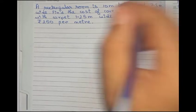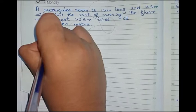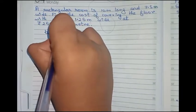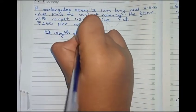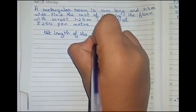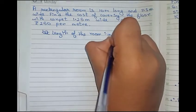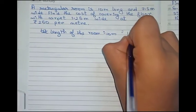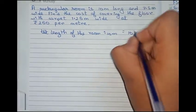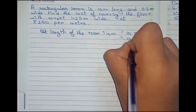Now solve this. First read length of the room. That is equal to 10 meter. Convert it into centimeter first. That is 10 into 100 which becomes 1000 centimeter.